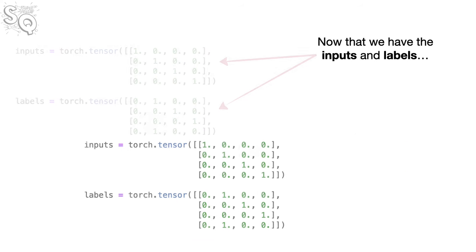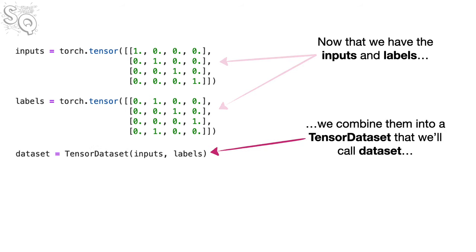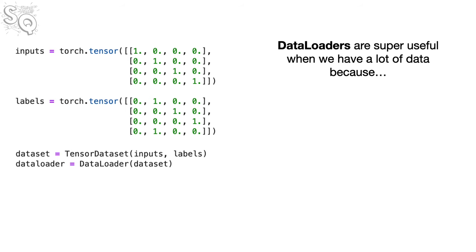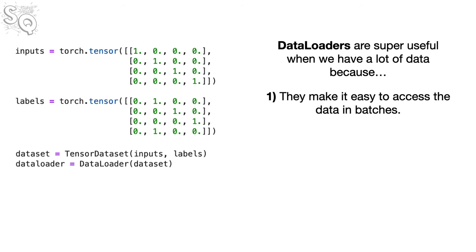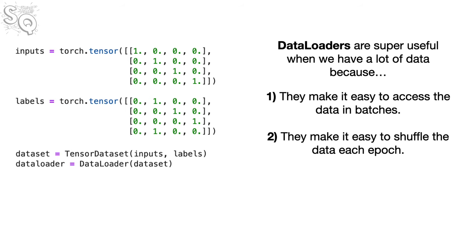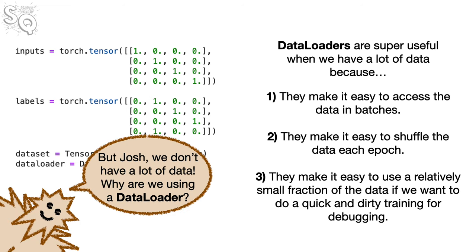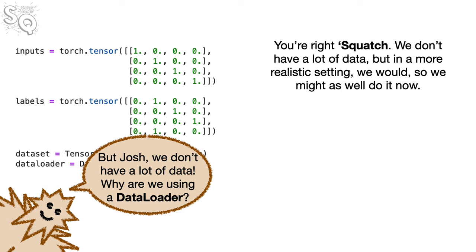Now that we have inputs and labels, we combine them into a TensorDataset called Dataset, then use it to create a DataLoader called DataLoader. Data loaders are super useful because they make it easy to access data in batches, shuffle data each epoch, and use a small fraction for quick debugging. Even though our dataset is small, using a DataLoader prepares us for more realistic settings.